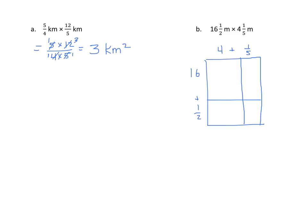Now we'll do our multiplying. I have 16 times 4, that's 64. I have 16 times 1 fifth, that's 16 fifths, and that becomes 3 and 1 fifth. I'll multiply 4 times 1 half, which is 4 halves, which becomes 2. And finally, 1 fifth times 1 half is 1 tenth.